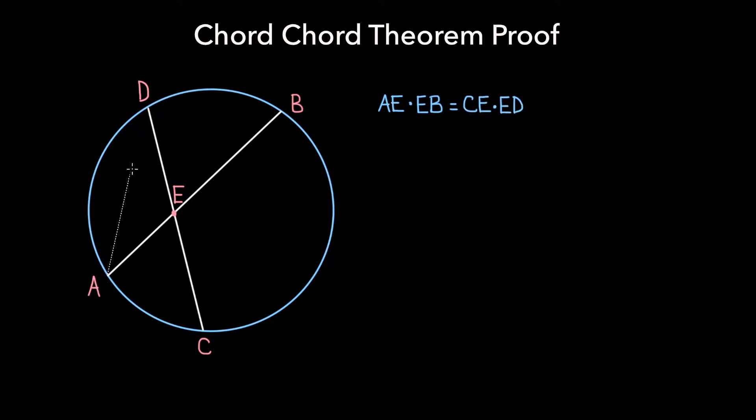To begin this proof, let's connect points A and D and points B and C to form two distinct triangles within our circle. Notice that angles AED and CEB are equal, since they're opposite interior angles.